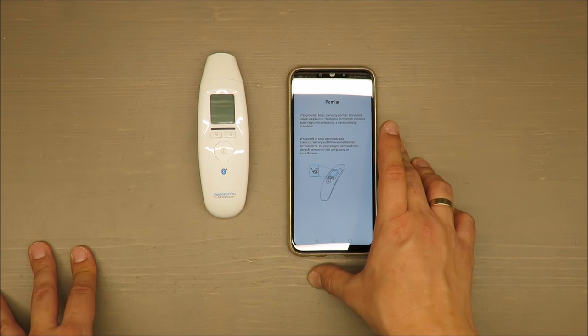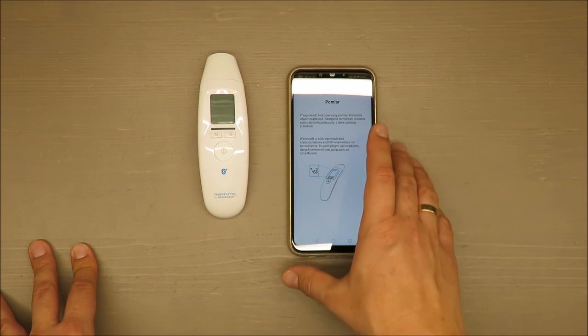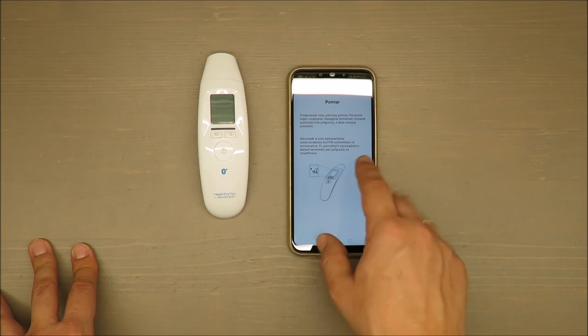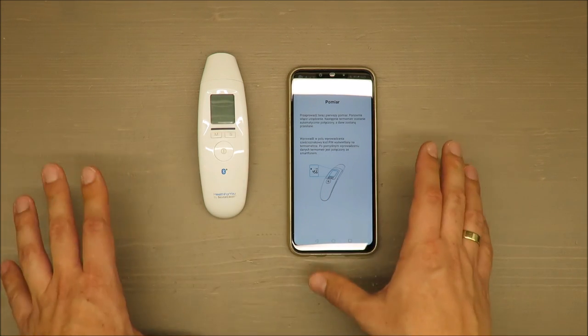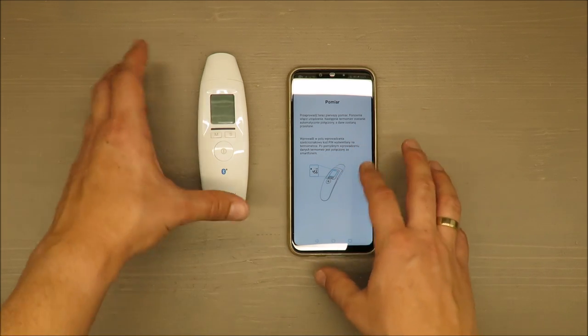The application is showing what you should do at each step. Then you're clicking next, and it's written that you should make a measurement and it will show a pin code that you have to enter to the smartphone, and it should be ready.